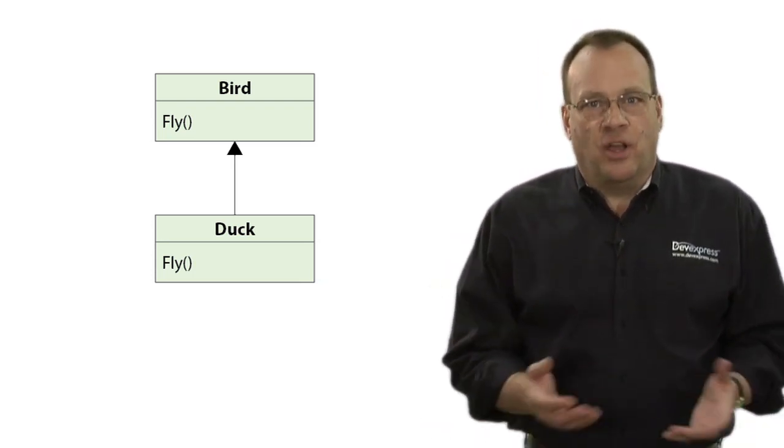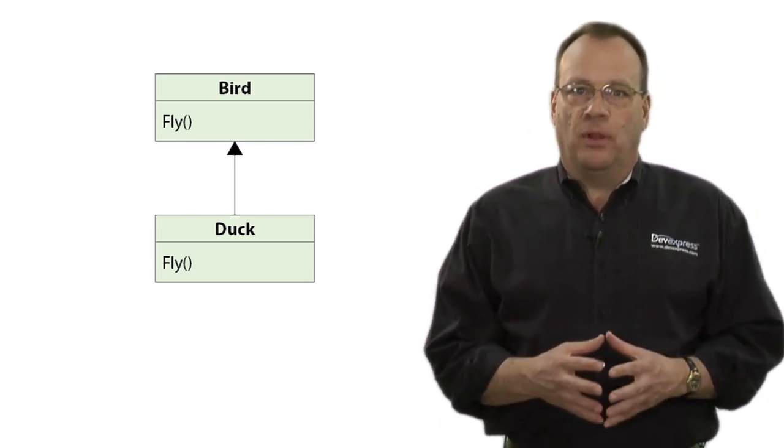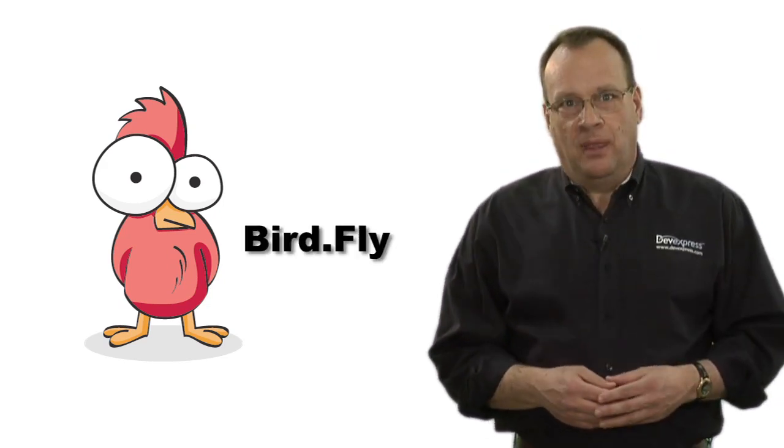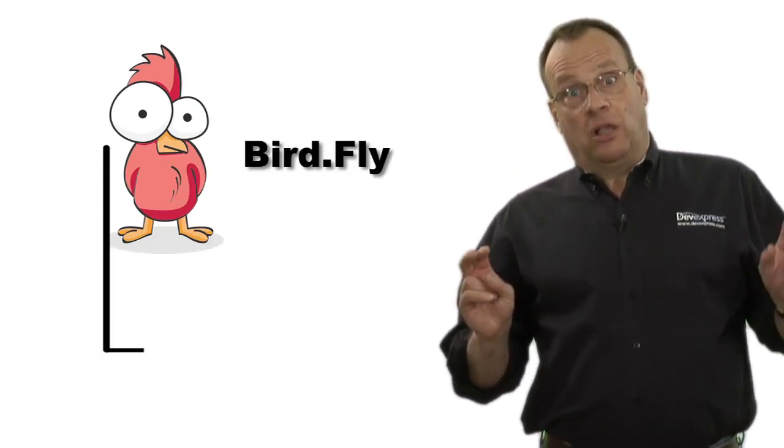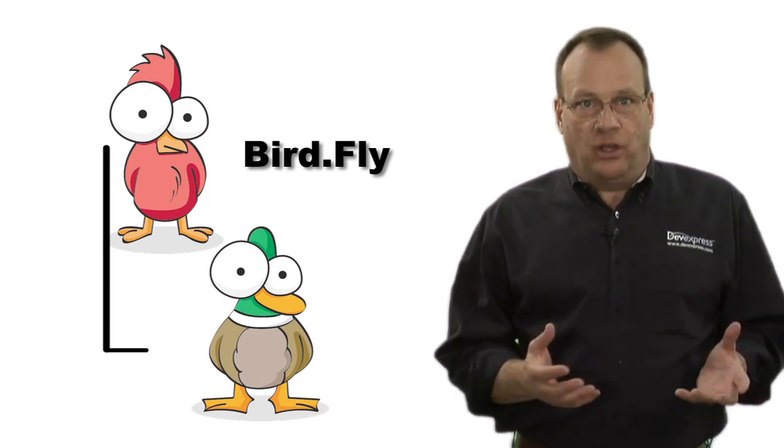Unfortunately, I don't have any examples of this from my own code since I have long since embraced this principle, so I'll have to make something up. Suppose we have a base class called Bird that has a virtual method called Fly. Then you could write a descendant Duck class that overrode that method to do something pertaining to how ducks fly.